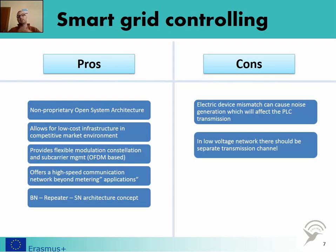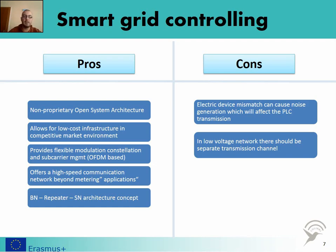There are some pros and cons of using wired communications. The pros are as follows: it is a non-proprietary, open system architecture. All we need is the existing electricity wire, which allows for low-cost infrastructure in a competitive market environment — no additional infrastructure is needed. It provides flexible modulation, constellation, and sub-carrier management, which is implemented by OFDM modulation, creating sub-carriers. This offers a high-speed communication network beyond metering applications, which means it can also be a carrier for internet access at your home.